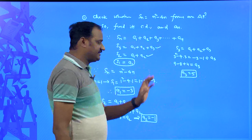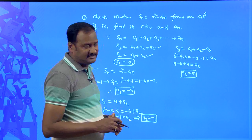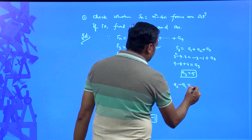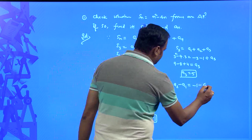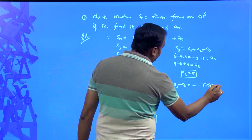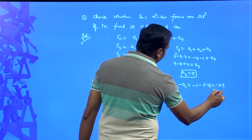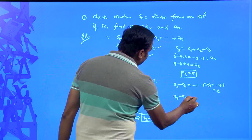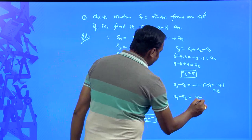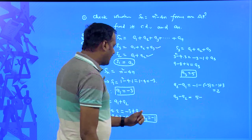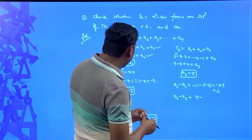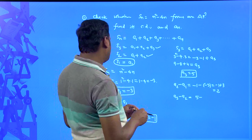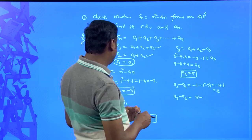After finding a1, a2, a3, let me check whether the common difference is the same. a2 minus a1 equals negative 1 minus negative 3 equals negative 1 plus 3 equals 2. So a2 minus a1 equals 2. Now a3 minus a2: a3 is 5 minus a2. But wait — let me check the values again: a1 equals negative 3, and a3 minus a2 gives 5 minus negative 1 equals 5 plus 1 equals 6. I am getting a different answer — let me recheck.